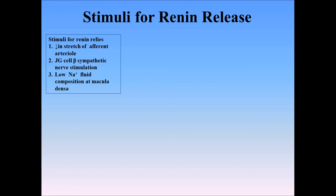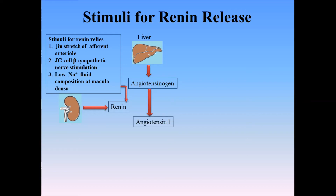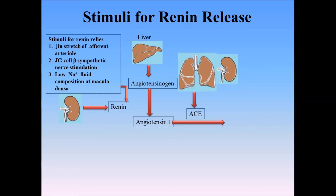The produced renin converts angiotensinogen, which is a serum alpha-2 globulin produced by the liver, into angiotensin I, which is an inactive peptide hormone. Angiotensin I is then converted into the active form, angiotensin II, by an enzyme called angiotensin-converting enzyme (ACE), which is produced by pulmonary surface cells and endothelial renal cells.